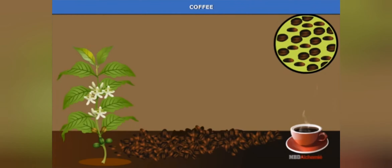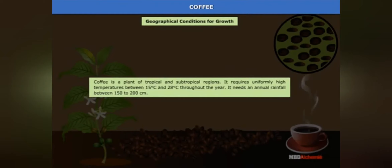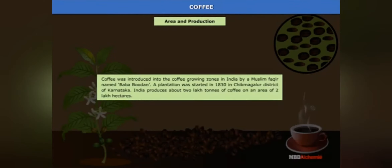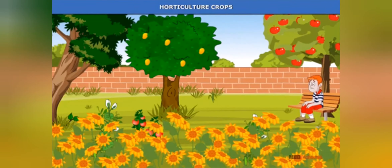The next plantation crop is coffee. In 2014, India produced 3.5% of the world's coffee production. India's coffee is known in the world market for its good quality — particularly the Arabica variety, initially brought from Yemen. This variety is in great demand all over the world. Coffee cultivation was initially introduced on the Baba Budhan Hills and today remains confined to the Nilgiris, Karnataka, Kerala, and some parts of Tamil Nadu.